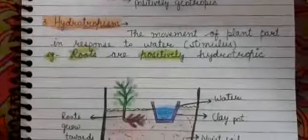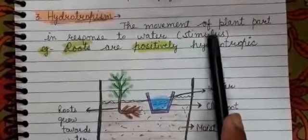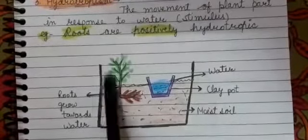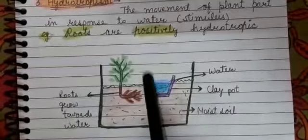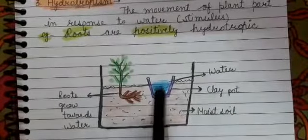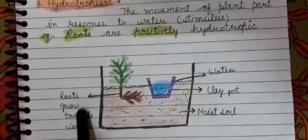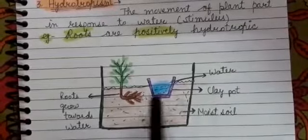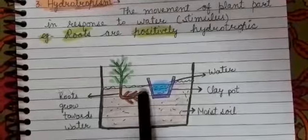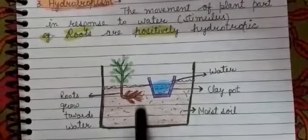The next type is hydrotropism — the movement of a plant part in response to water. The stimulus is water. Suppose there is a pit in the soil and you have buried a clay pot filled with water in it, with a plant growing nearby. If you dig the soil, you will find that the roots are growing towards the clay pot. So these roots are showing positive hydrotropism — roots are positively hydrotropic.